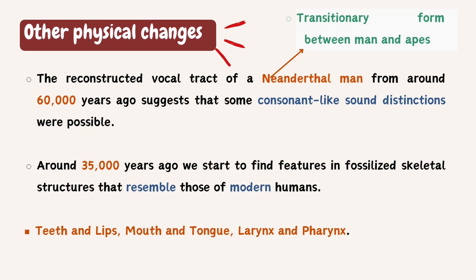Other physical changes also played a vital role in language production. The reconstructed vocal tract of Neanderthal man — a transitional form between man and apes — from around 60,000 years ago suggests that some consonant-like sound distinctions were possible at that time. Around 35,000 years ago, we start to find features in fossilized skeletal structures that resemble those of modern humans. This was also connected to Darwin's evolutionary theory, suggesting that humans evolved from apes.